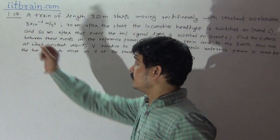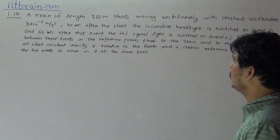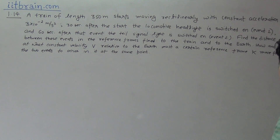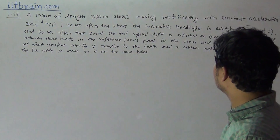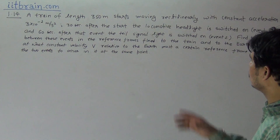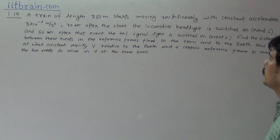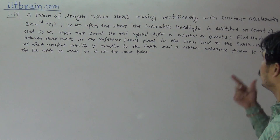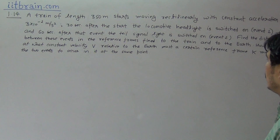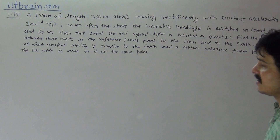Hello students, this is problem 1.14. A train of length 350 meters starts moving rectilinearly with constant acceleration 3×10⁻² meter per second square. 30 seconds after the start, the locomotive headlight is switched on — that is Event 1 — and 60 seconds after that, the tail signal light is switched on — that is Event 2. Find the distance between these events in the reference frames fixed to the train and to the earth, and at what constant velocity must a certain reference frame move relative to the earth for the two events to occur at the same point.